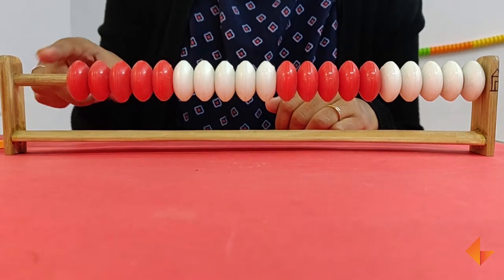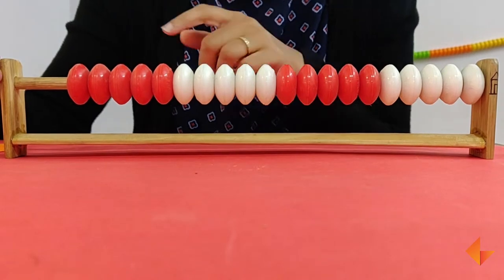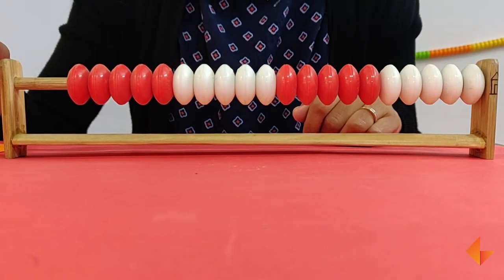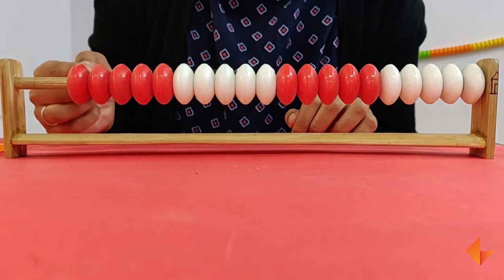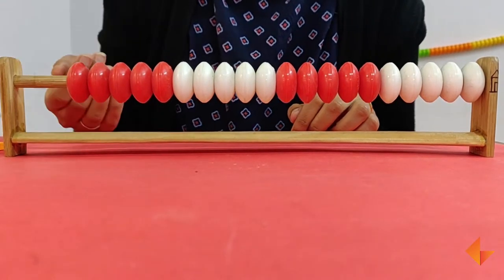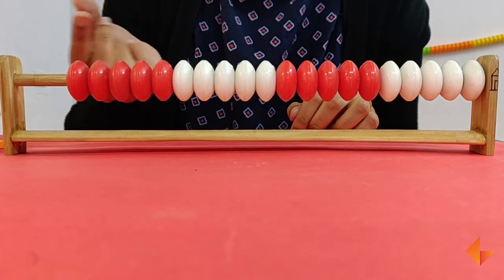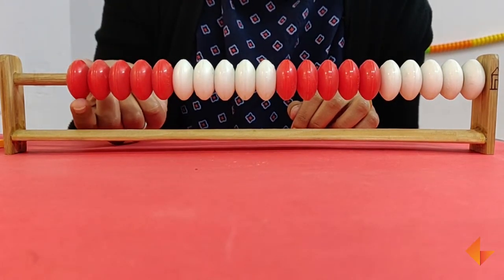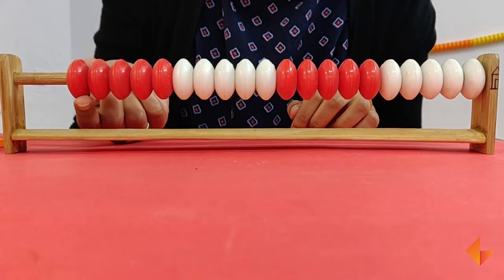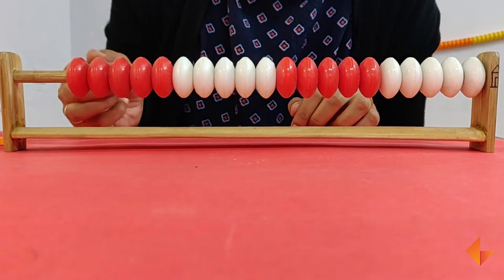The ganith rack has 20 beads and we always start counting from the left to the right of the ganith rack. When you count on the ganith rack, always make sure the ganith rack is facing the children and you move the beads from left to right by holding the beads at the bottom. Holding the beads at the bottom makes sure the children can see the beads from the other side.